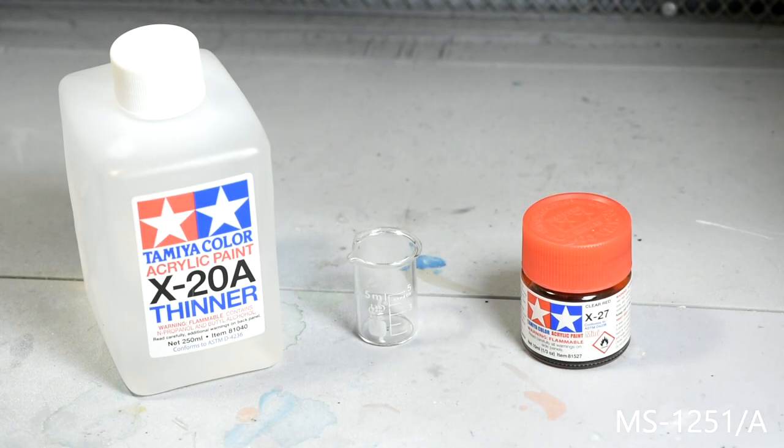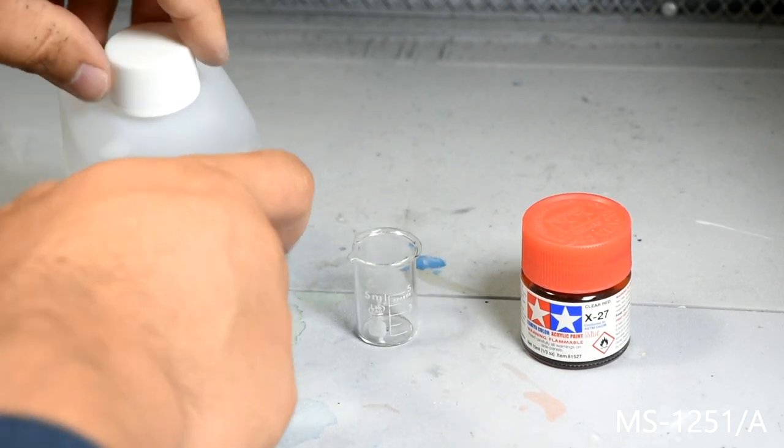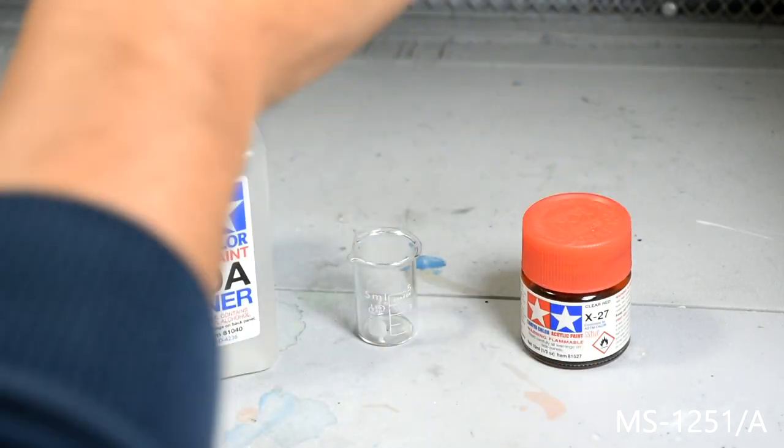For this video I chose to spray Tamiya X-27 clear red. I thinned it using one part Tamiya acrylic thinner and one part paint.